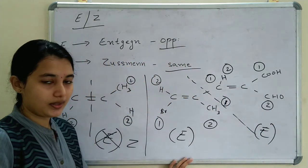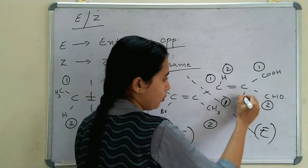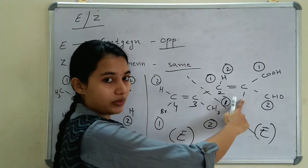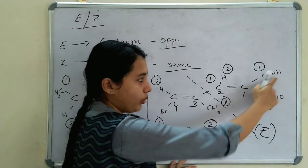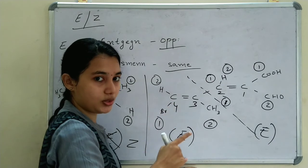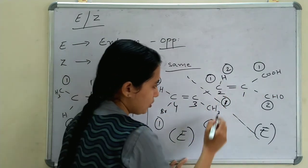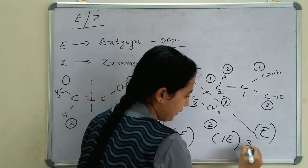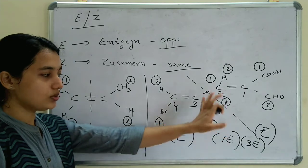For the numbering prefix in E/Z nomenclature, we number the carbon chain: COOH is on carbon 1, so we number 1, 2, 3, 4. The first double bond gets E and the third carbon double bond also gets E. So the configuration is 1E, 3E for this compound. Just as with R and S, remember to include the carbon position prefix numbers.